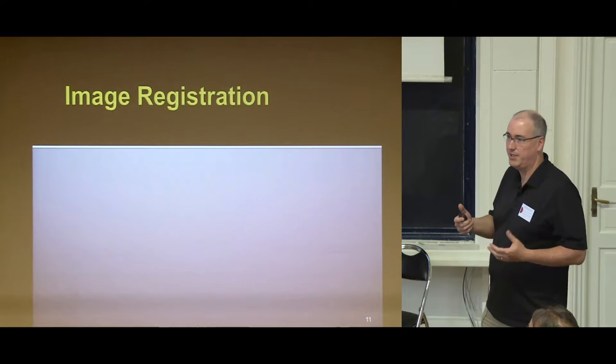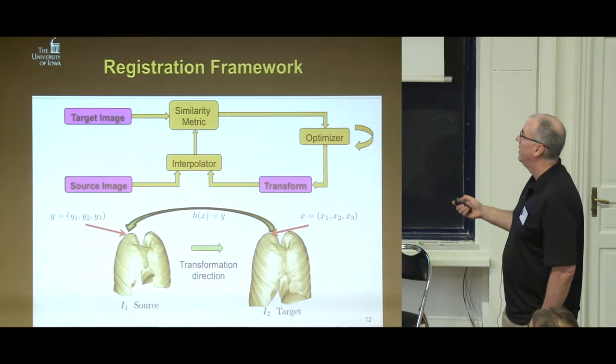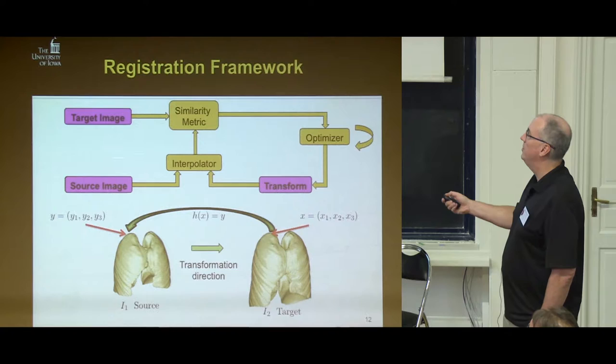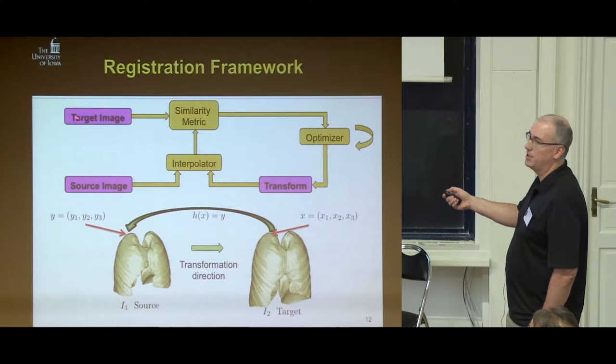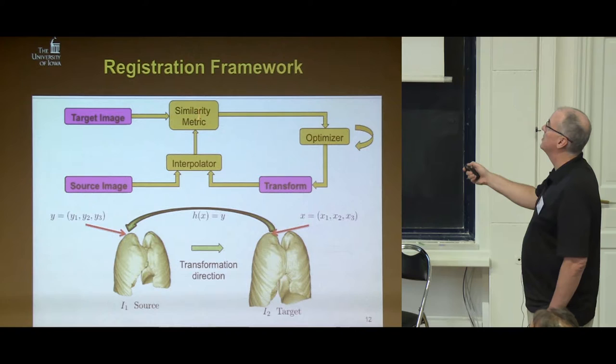We want to have really accurate registration, and ideally we would like this to track with the lung because the lung breathes — it moves during the breathing operation. The tighter we can get this, the more we can spare the normal tissue. Yosin gave a great introduction to image registration, and we've seen other talks this week talking about image registration. Here's a simple flow chart of how we do image registration: we start with two images, the target image and the source image, and what we want to do is change the source image so it looks like the target.